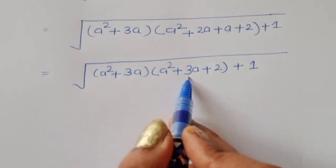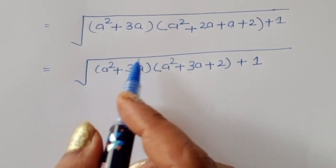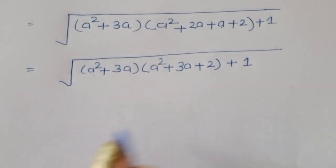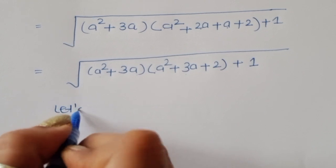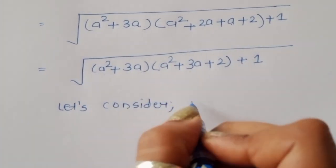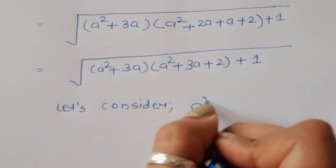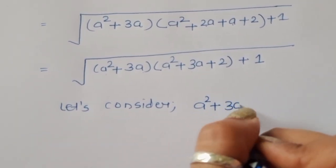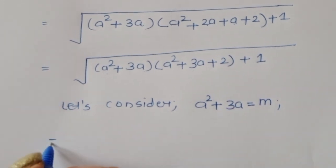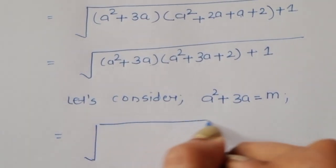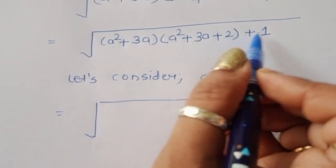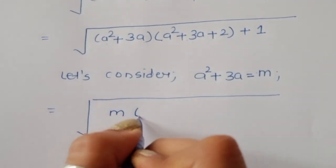Now we notice that a squared plus 3a is common in both factors. So let's substitute m equal to a squared plus 3a. With this substitution, the expression becomes m times (m plus 2) plus 1.